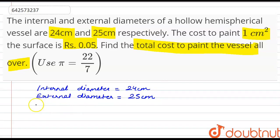Okay, that means the internal radius, that is small r, is 24 by 2, which equals 12 cm.